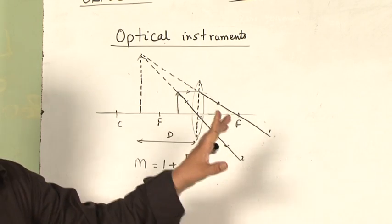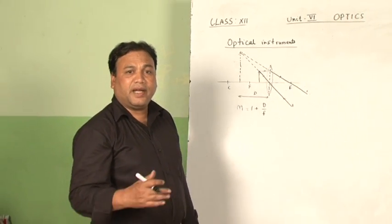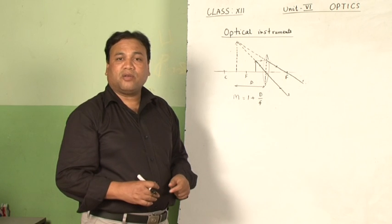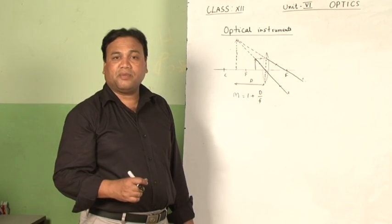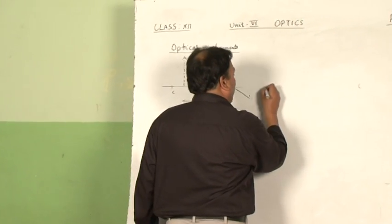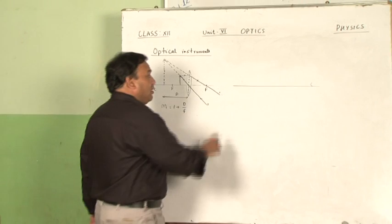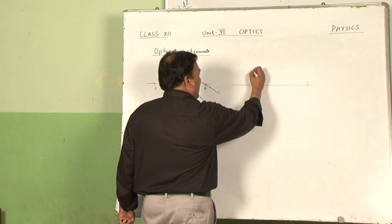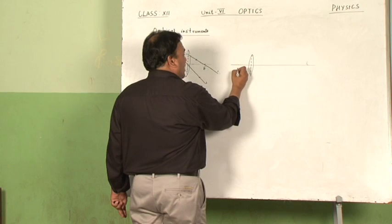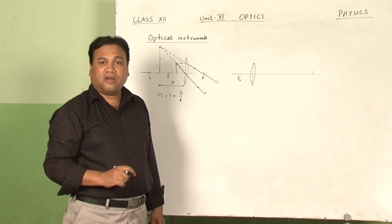This concept will be used in the next optical instrument, which is called a compound microscope. In a compound microscope, we can get a bigger magnification. Naturally, it has more than one lens. The compound microscope works as follows: it has two lenses — one is the objective lens, placed towards the object, of short focal length. When the object is placed beyond its focus, this lens forms a real and inverted image on the other side.